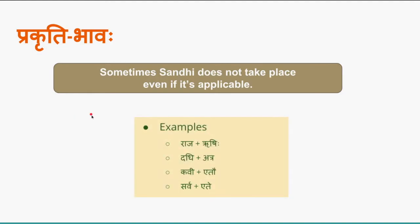There are a few examples. In 'raja + rishihi', raja ends with 'a' and rishi starts with 'rikara', so akara and rikara would generally cause guna sandhi, but 'raja rishi' does not undergo sandhi. Similarly, 'dadhi + atra' — ikara plus akara should cause yanaadesha sandhi, but it doesn't. 'Kavi + etho' — ikara plus akara should undergo yanaadesha sandhi but doesn't. 'Sarva + ethe' — akara plus akara, sandhi should happen but doesn't.